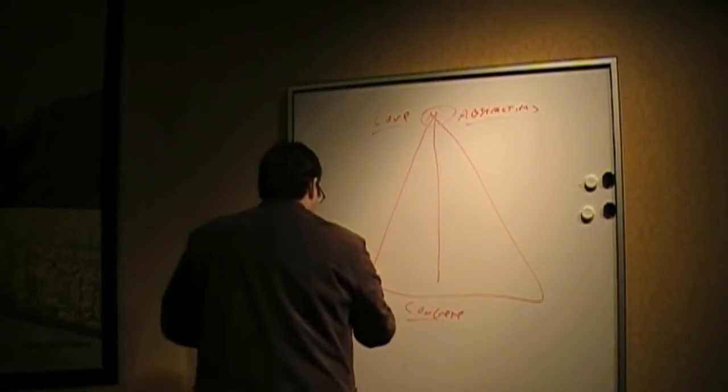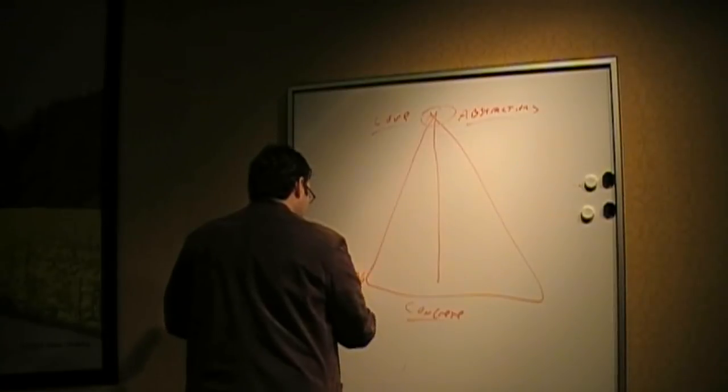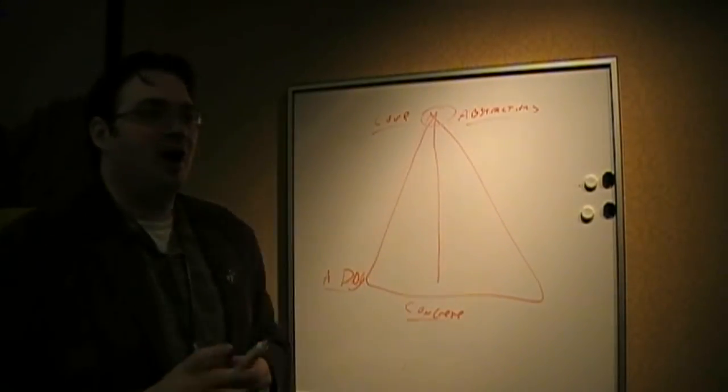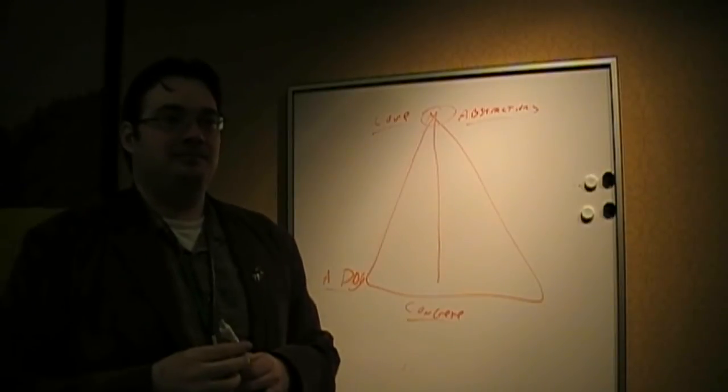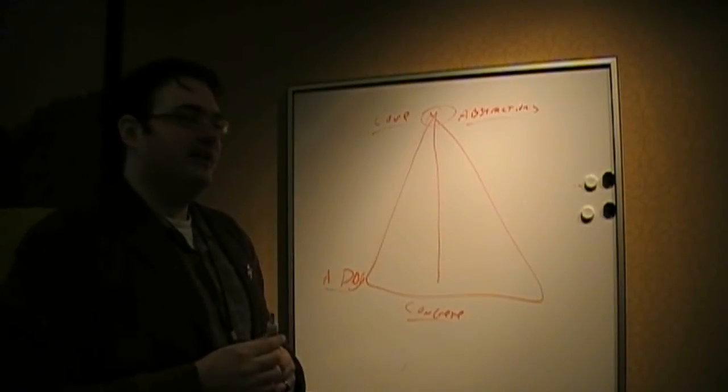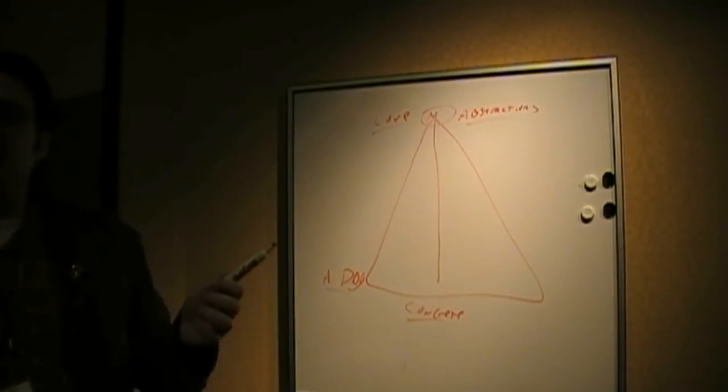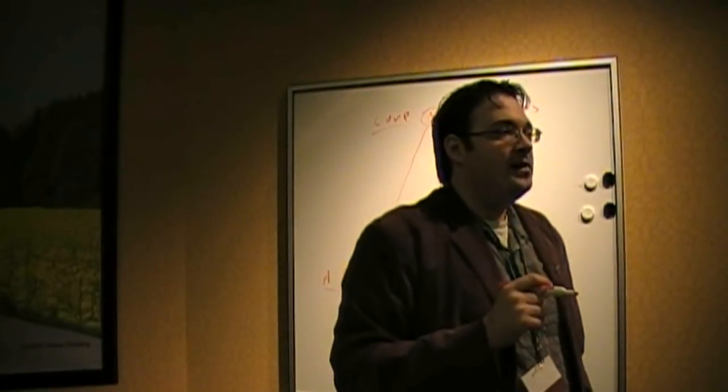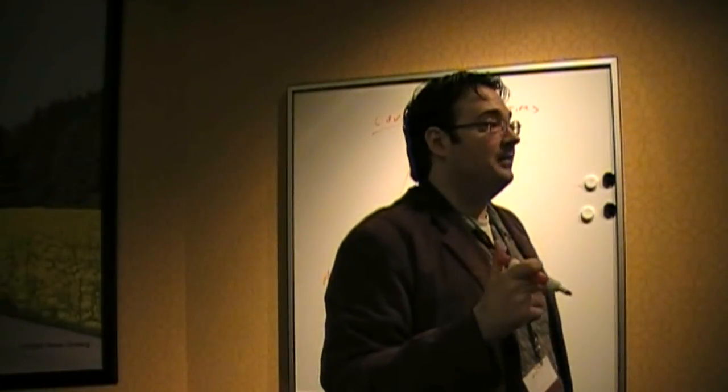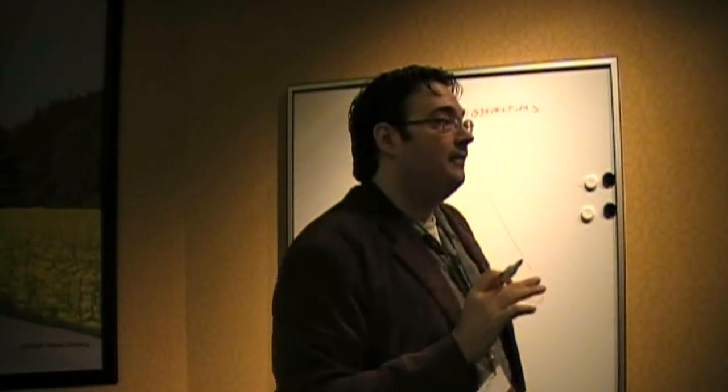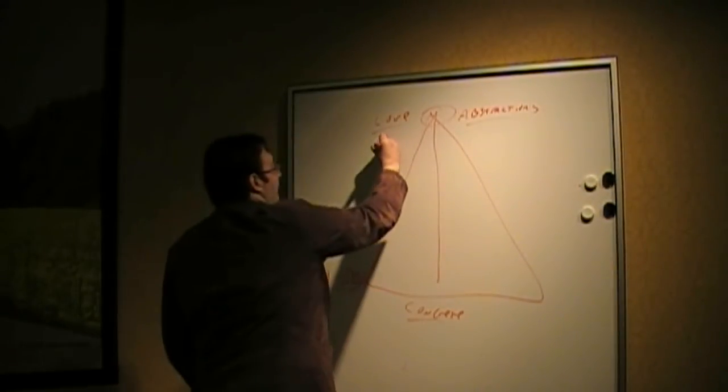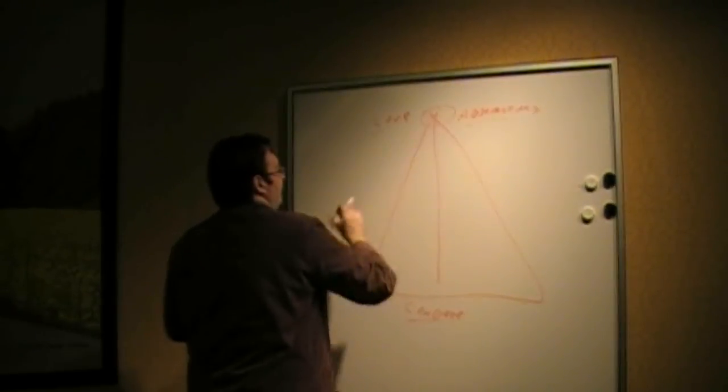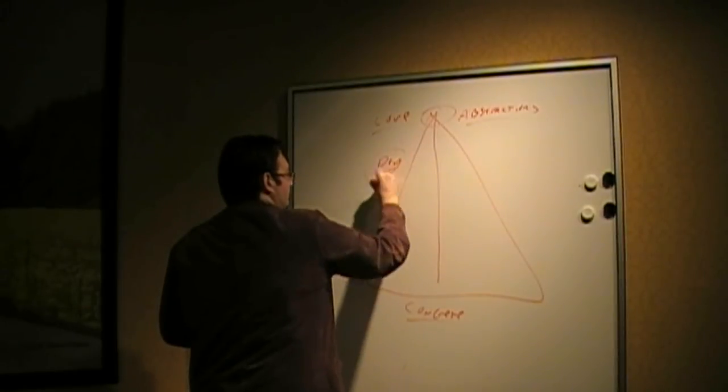When I say a dog, how many different types of dogs do people in this room imagine? Hundreds. Is a dog, so when I say a dog, each of you think of a different thing. Is a dog a concrete concept? A dog is an abstract concept. Not as abstract as love, but it's still a very abstract concept. Dog is up here. Okay. It might be more like right here.